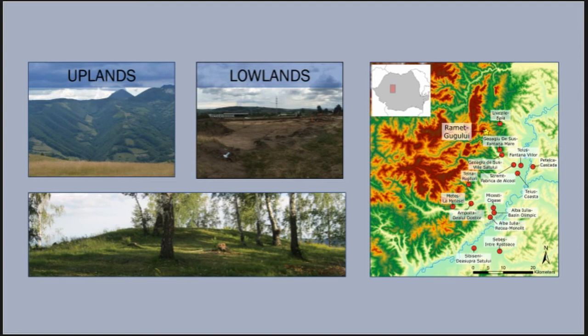The stone-covered cairns of the uplands present a contrast to the earthen mounds of the lowlands. In the settlements along the Mureș River, mortuary practices are characterized by frog-style burials in the earthen mounds, with individuals positioned on their backs with both arms and legs lightly flexed. However, even these typical examples of each type of tomb conceal a fair amount of mortuary variability.